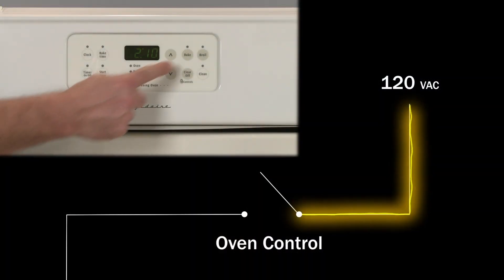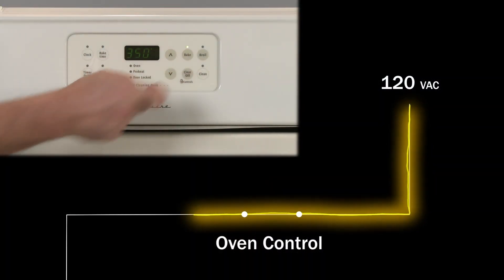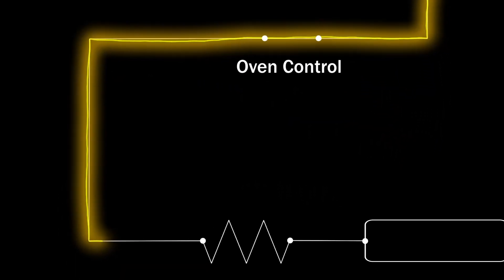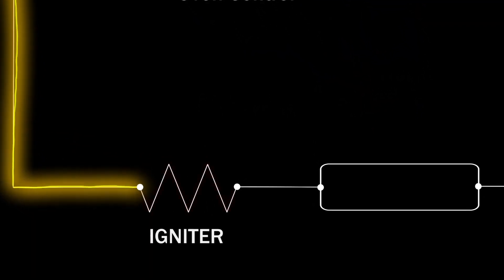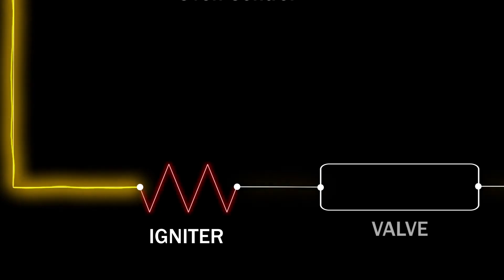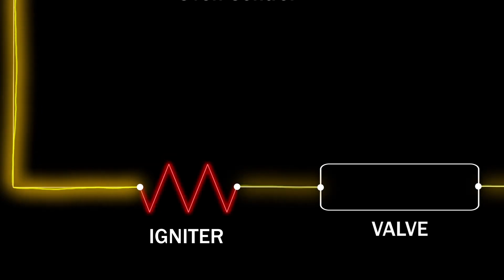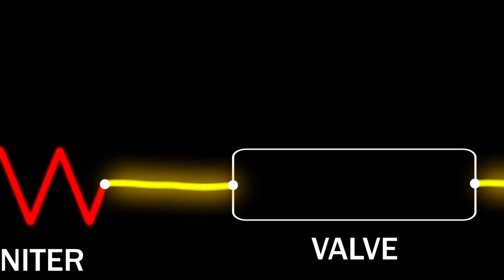When you select the bake or broil function, the control sends 120 volts of alternating current to the appropriate igniter. The igniter is wired to the safety valve and, as the igniter starts to get hot, it draws an increased current or amps through the valve.